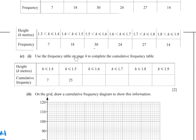Part (c)(i): Use the frequency table to complete the cumulative frequency table. Start with the first value, then add: 7 plus 18 equals 25. 25 plus 30 equals 55. 55 plus 24 equals 79. 79 plus 27 equals 106. 106 plus 14 equals 120.